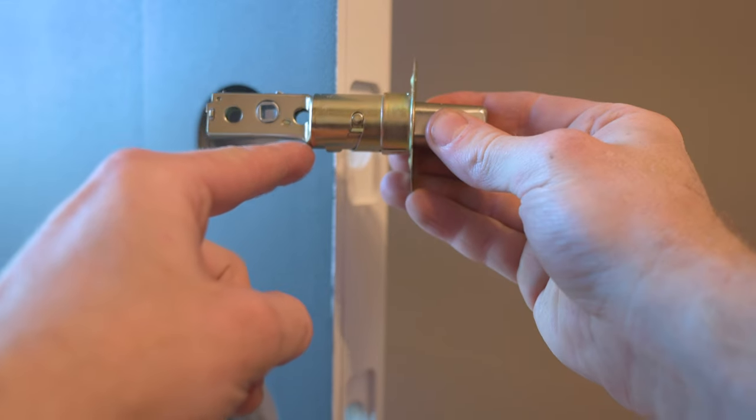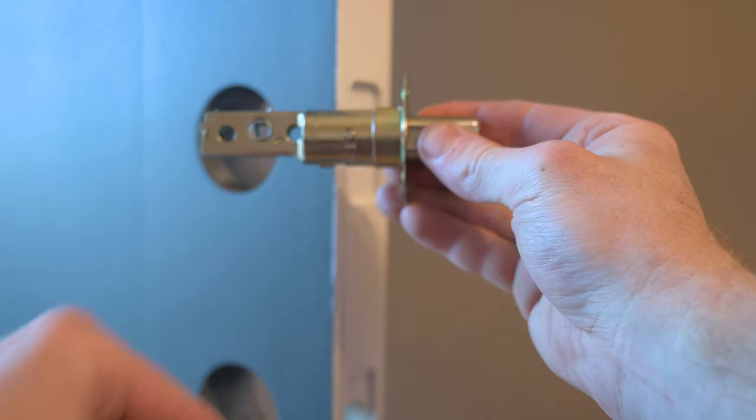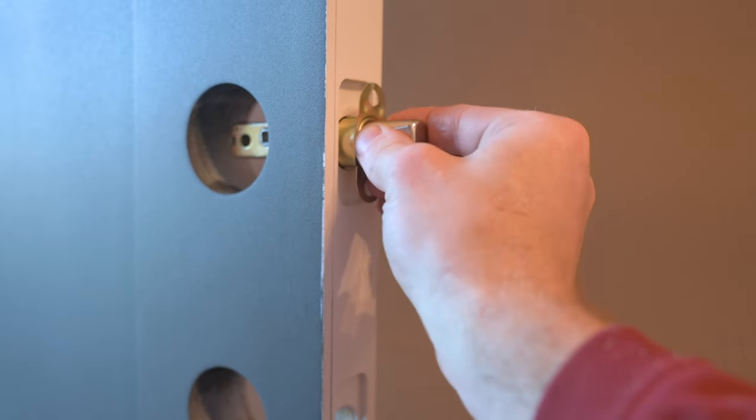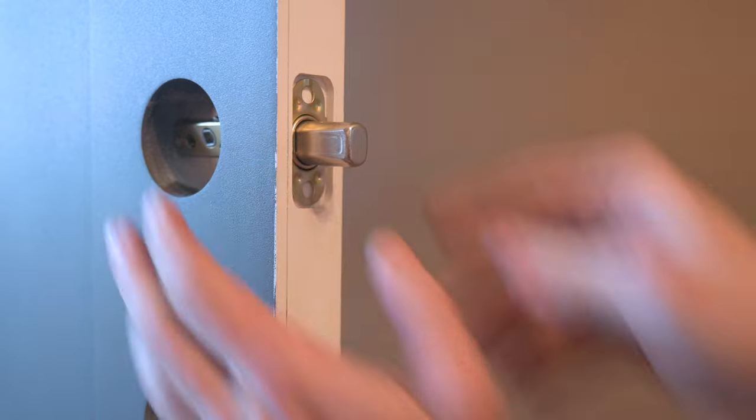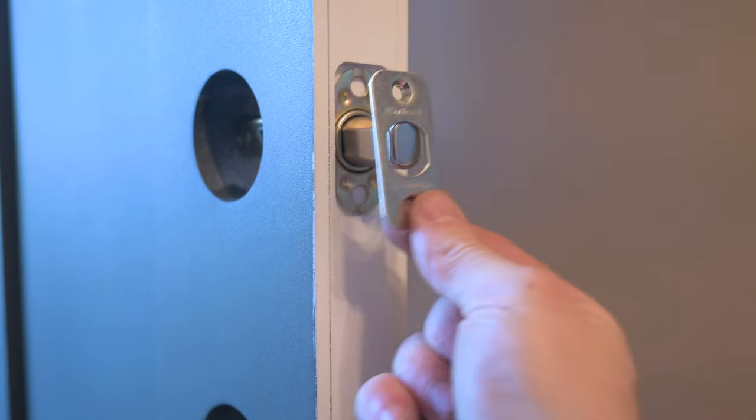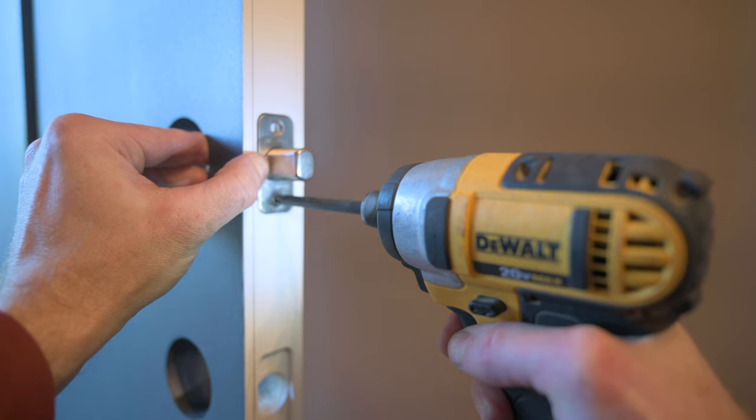And this curved part here lets us know that this is the bottom of the latch bolt. So this slides in with that curved side down, and probably needs a good push to set it in place. And we take two of these small screws to fully attach that faceplate and the latch bolt behind it.